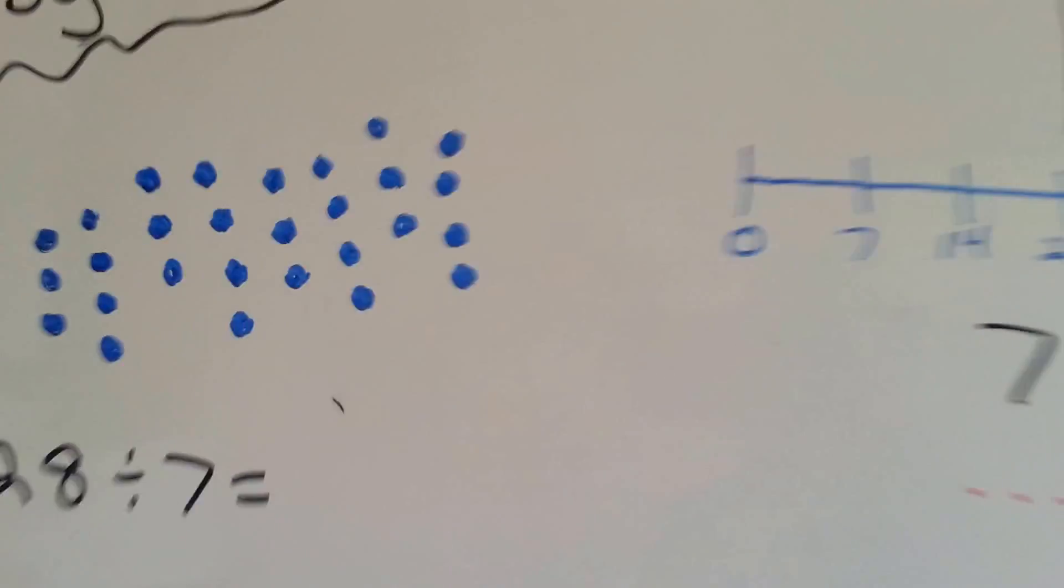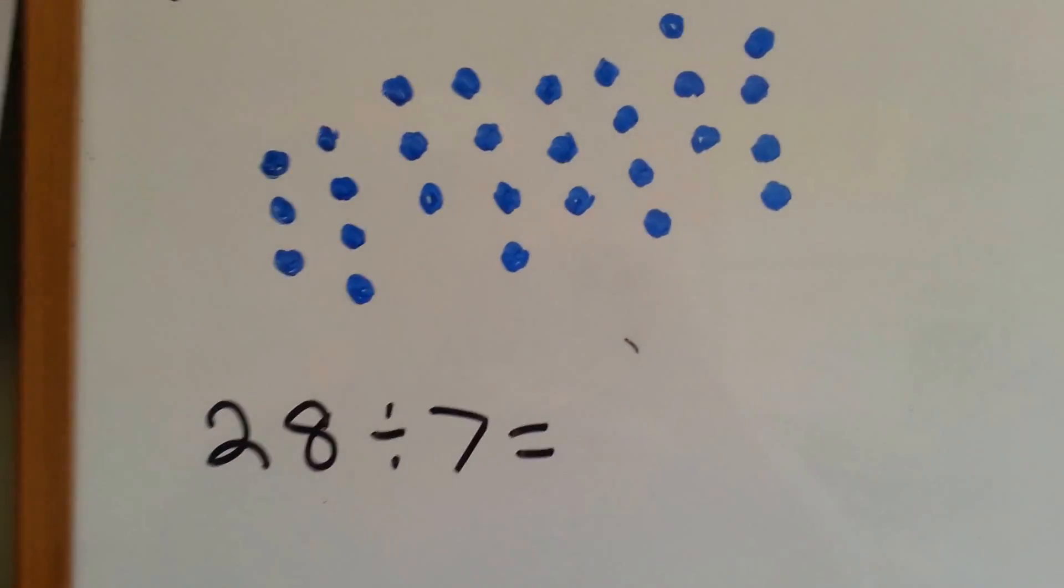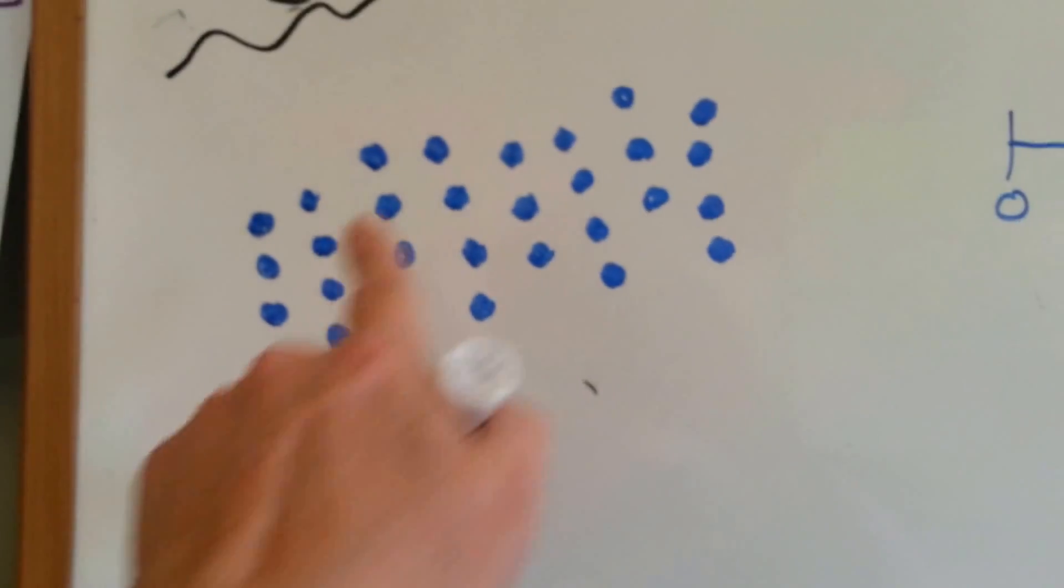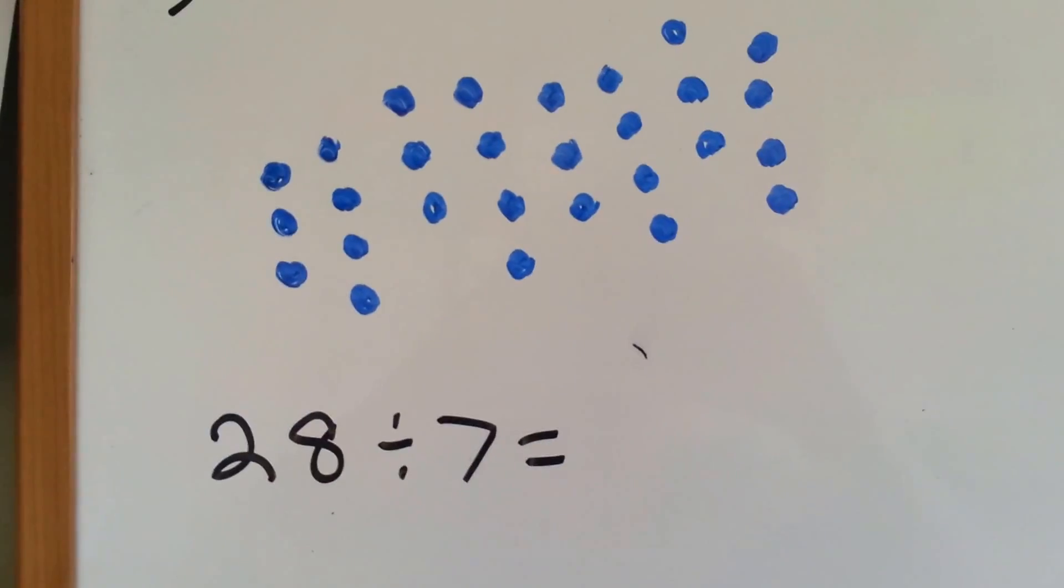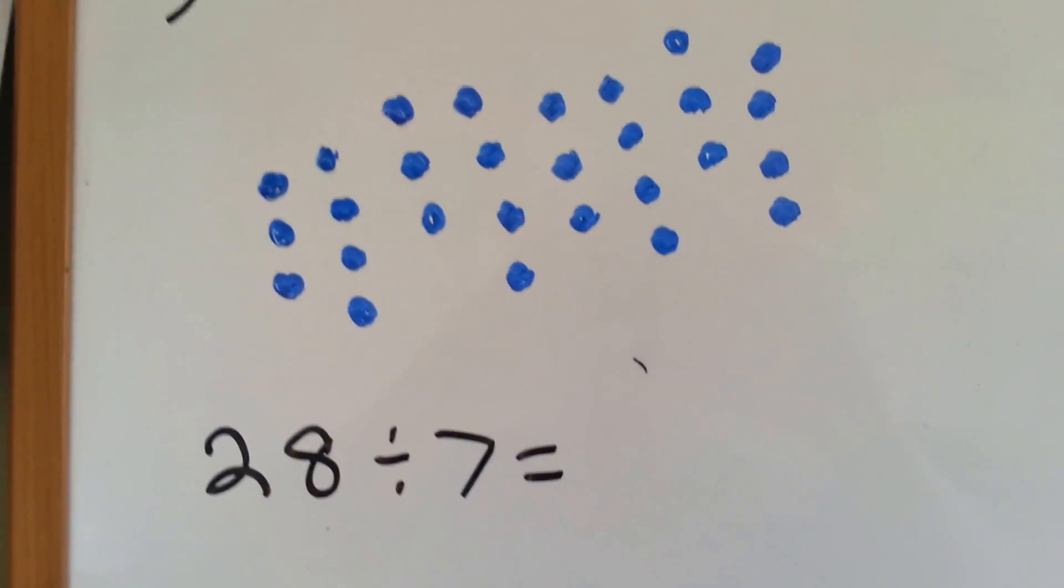Alright, let's take a look at our first one here. We've got lots of dots. We've got 28 dots here. So what we're going to do is we're going to circle groups of 7, and we're going to see how many groups we get.